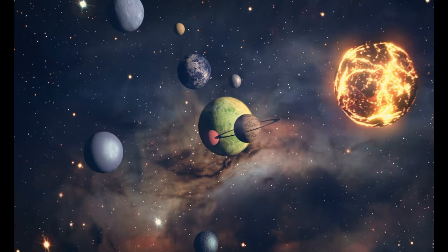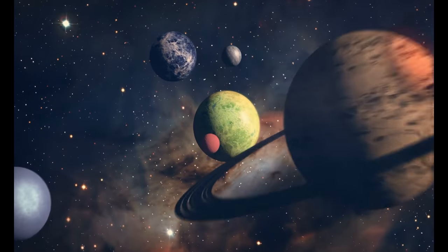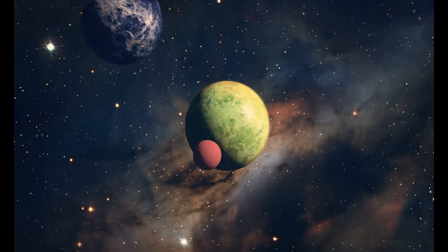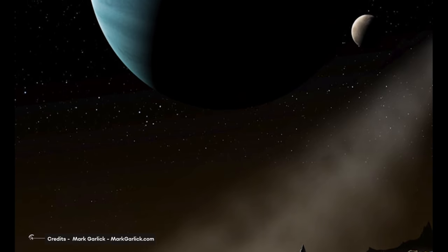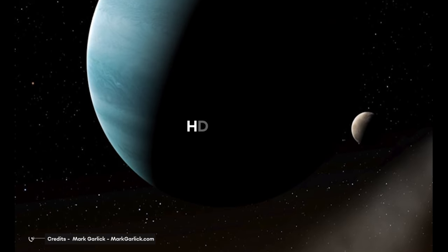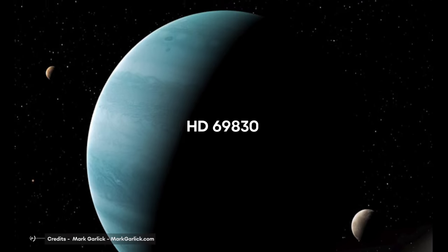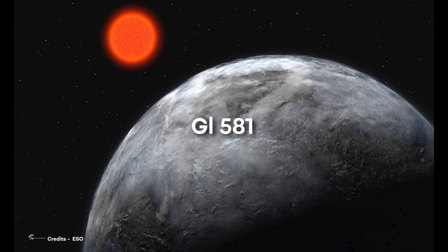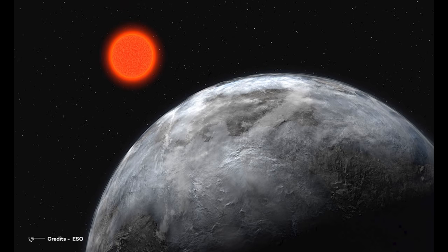HARPS is also very efficient in finding planetary systems where tiny signals have to be uncovered. The two systems known to have three low-mass planets HD 69830 and G1581 were discovered by HARPS.